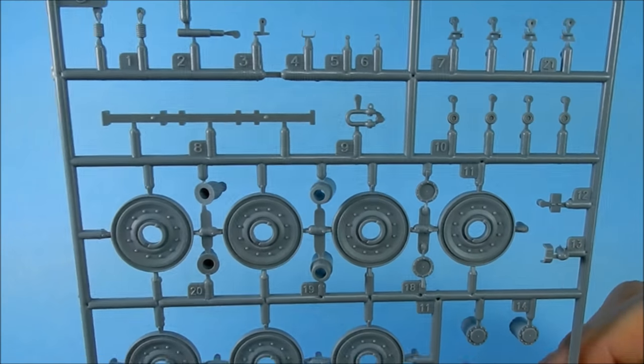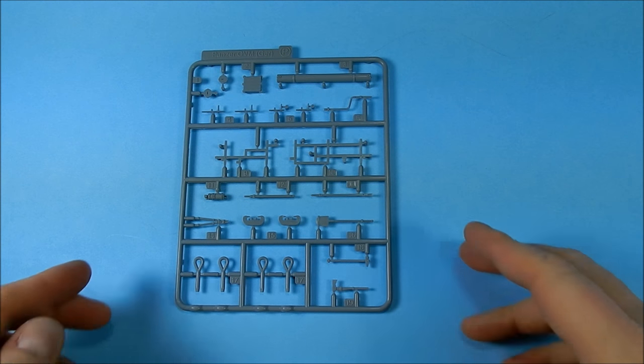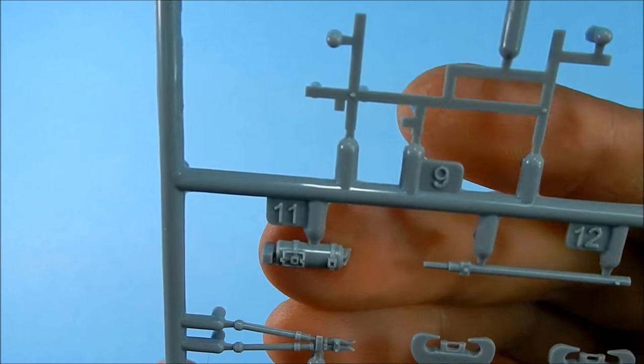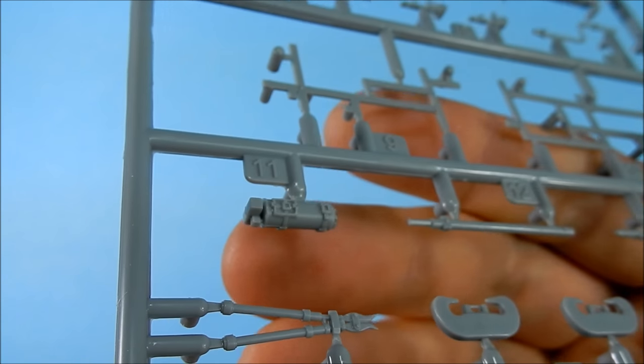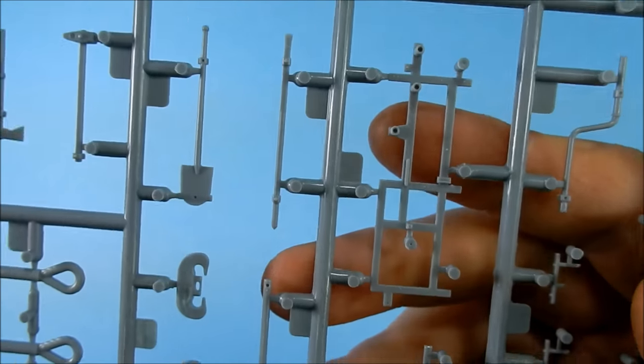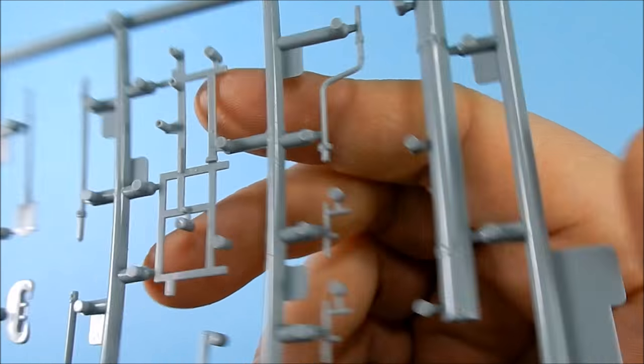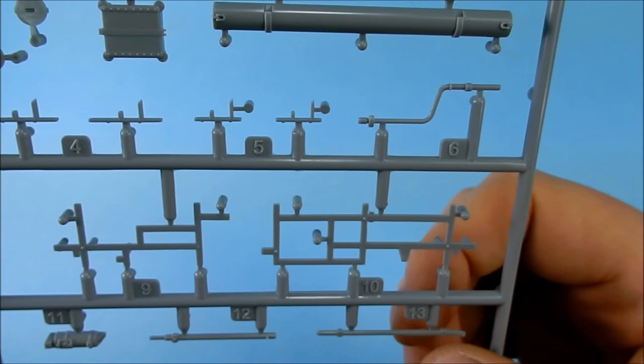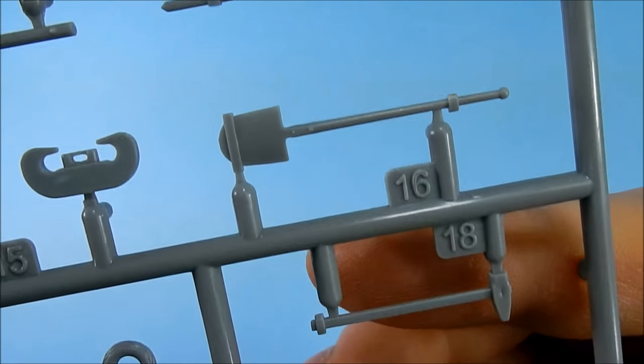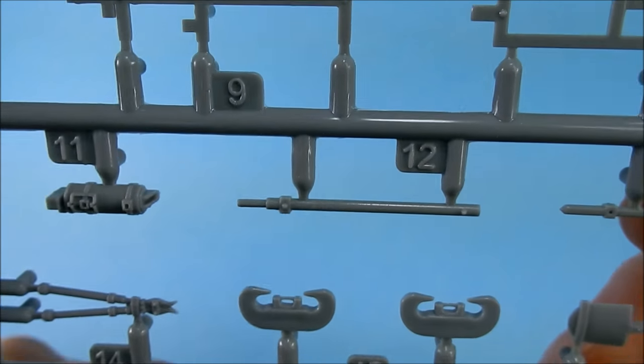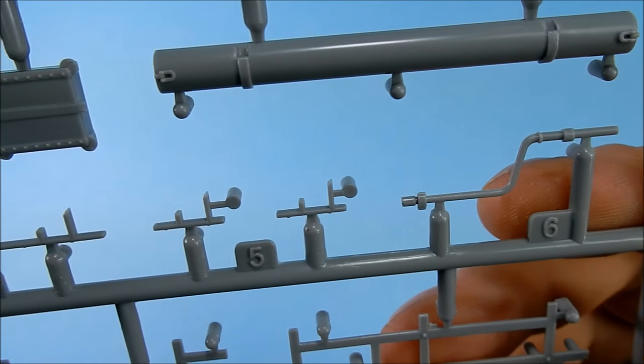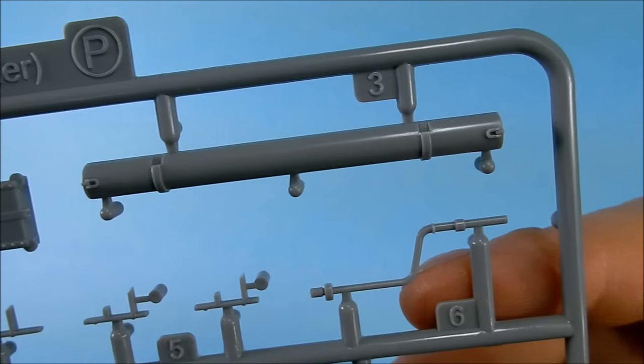Okay this is sprue P, you only get one of these, this is all your tools and tow rope ends. They're all right. The fire extinguisher is actually quite nice but everything else is average. The frames that go on the vehicle itself are pretty nice but the tools are average, there's no clasps detail at all, there's just a band around all of them. Sledgehammer's got a bit of a sink mark not a big deal. It's a little disappointing considering the rest of the detail level of the kit they didn't put some representation of the tool clasps but I'm sure that somebody will come out with a photo etch set for this thing fairly shortly, probably Voyager.